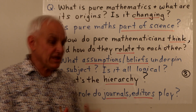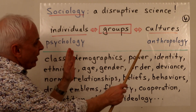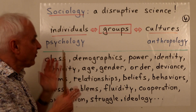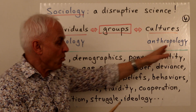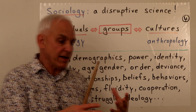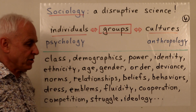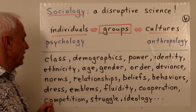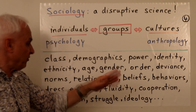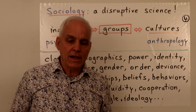Sociology, I think, really is a kind of disruptive science. Simply put, it concerns itself with groups made of individuals — individuals being more the study of psychology — while groups are embedded in cultures, which is more the field of anthropology. Sociology is adjacent to psychology and anthropology, but mostly concerned with the internal workings of groups and how groups interact. This includes aspects like class, demographics, power, identity, ethnicity, age, gender, order, deviance, norms, relationships, beliefs, behaviors, dress, emblems, fluidity, cooperation, competition, struggle, and ideology.